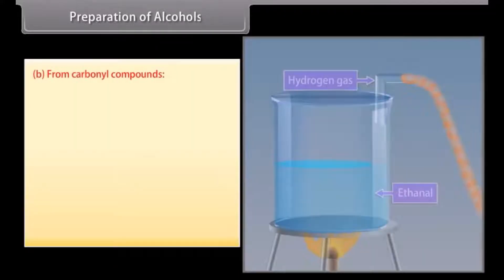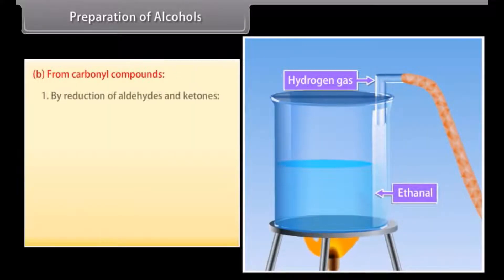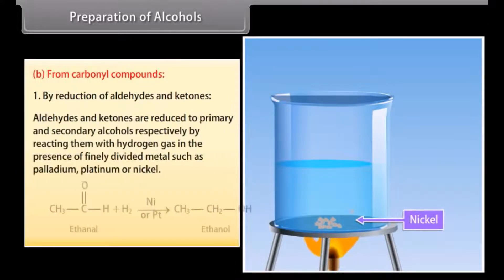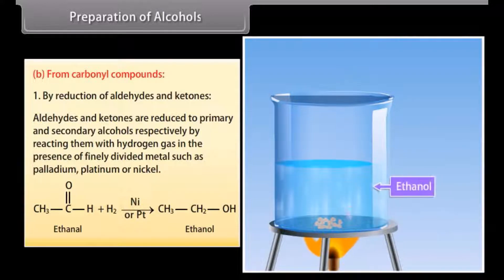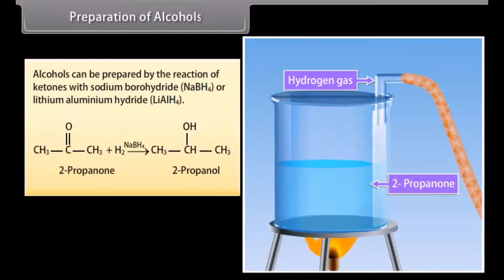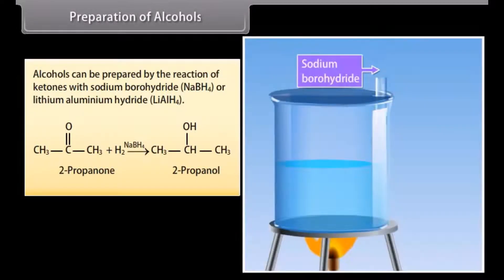Preparation of alcohols from carbonyl compounds by reduction. Aldehydes and ketones are reduced to primary and secondary alcohols respectively by reacting them with hydrogen gas in the presence of finely divided metals such as palladium, platinum or nickel. Alcohols can also be prepared by the reaction of ketones with sodium borohydride or lithium aluminium hydride.